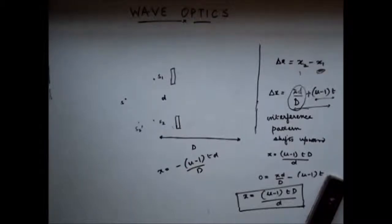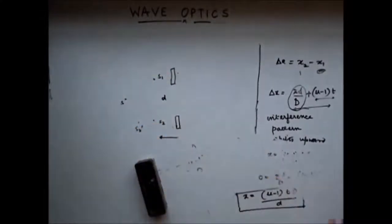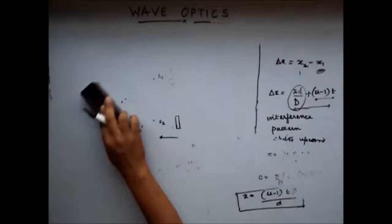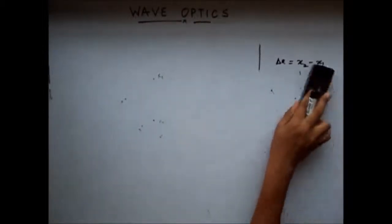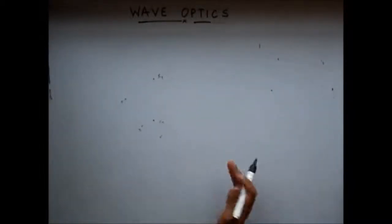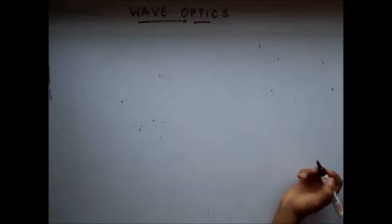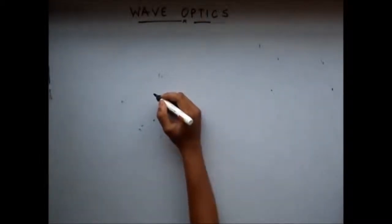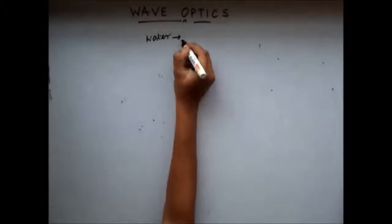Till now we had discussed all the setups in vacuum — the YDSE setup, Lloyd's mirror, and Fresnel's double mirror were all in vacuum. Now let's say that the Young's double slit experiment setup is kept in some medium with refractive index μ0. Let's say that medium is water with refractive index μ0.